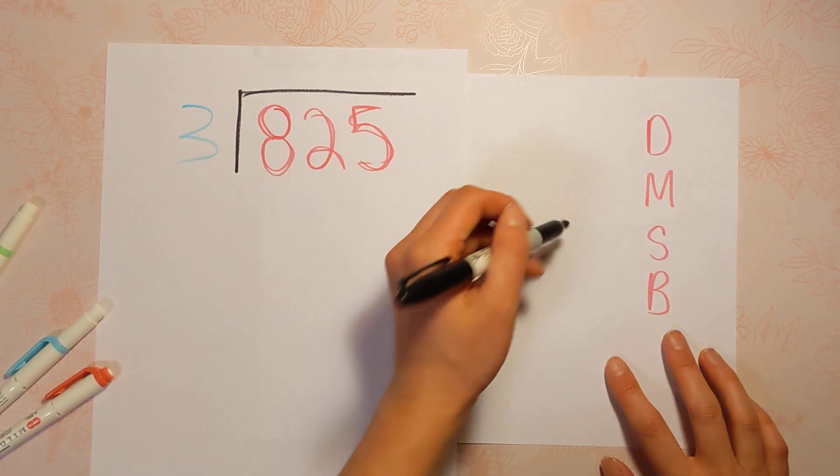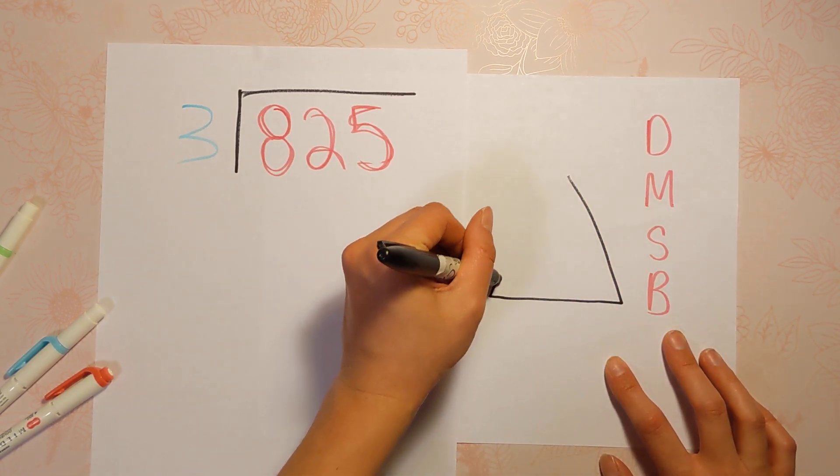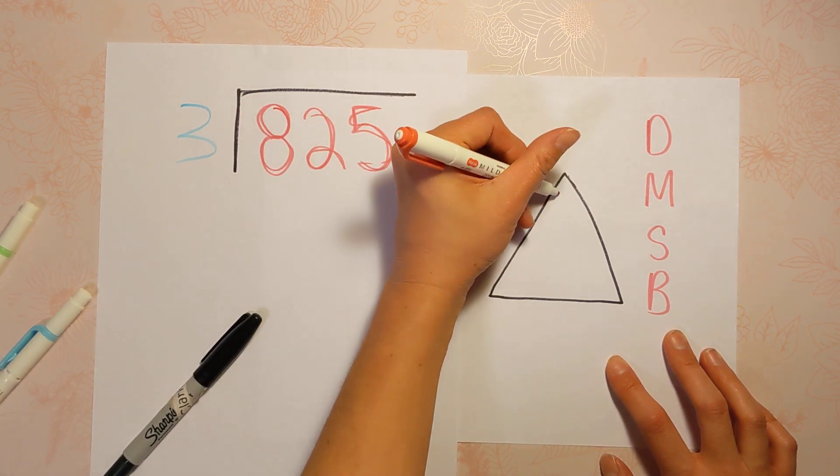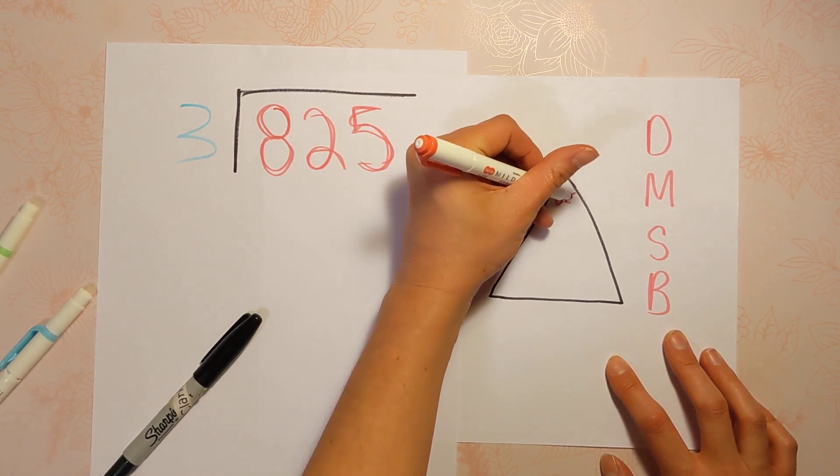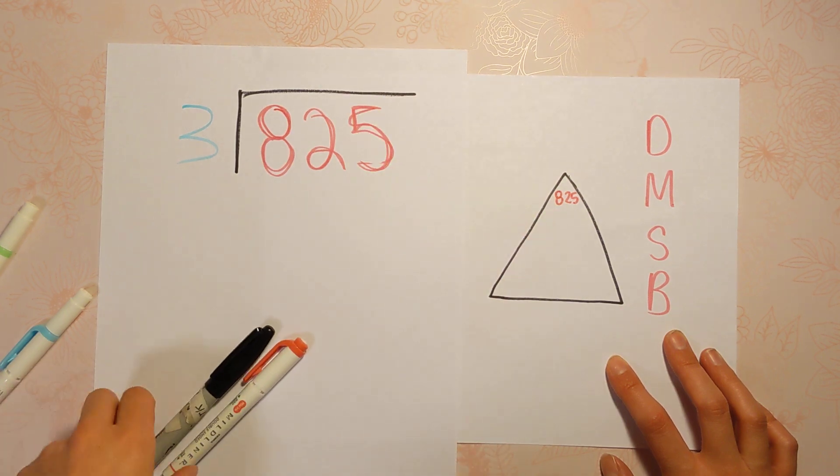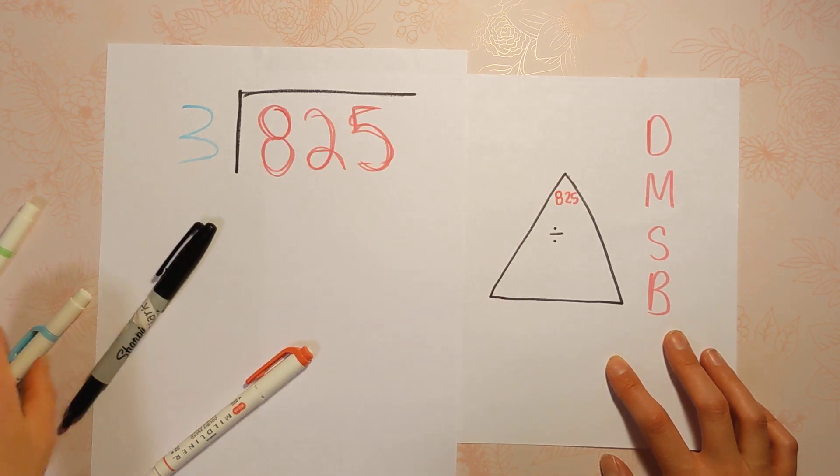So I always like to draw a fact triangle and I highly recommend that you do that too so that you can see what we're working with. 825 is our biggest number and it's getting divided up. So I'll put our division symbol in here and we're dividing it by 3.